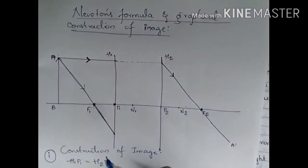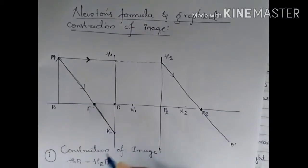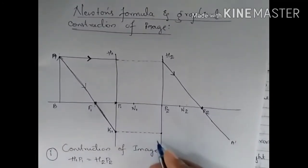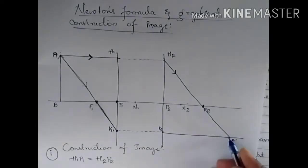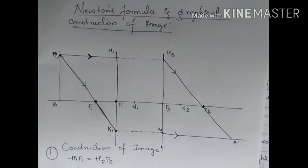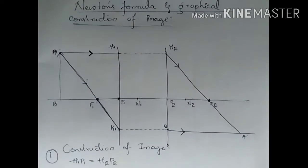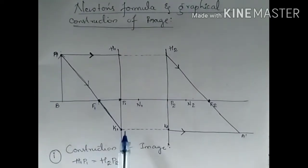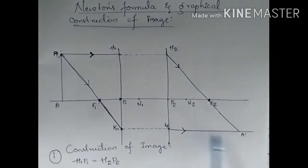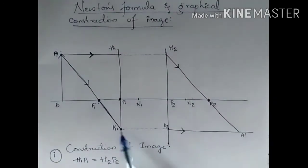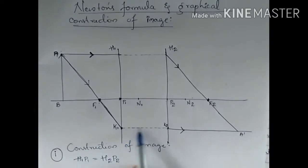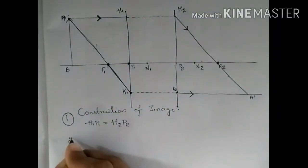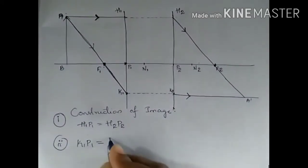This ray crosses the first principal plane at K1 — denote this point as K1. From K1, draw a parallel line, and from K2 on the second principal plane, the incident ray will emerge out. A ray which came from A, passed through the first focal point, crossed the principal plane at K1, and emerged from K2. From the diagram, K2P2 equals K1P1 because this line is parallel to the principal axis.